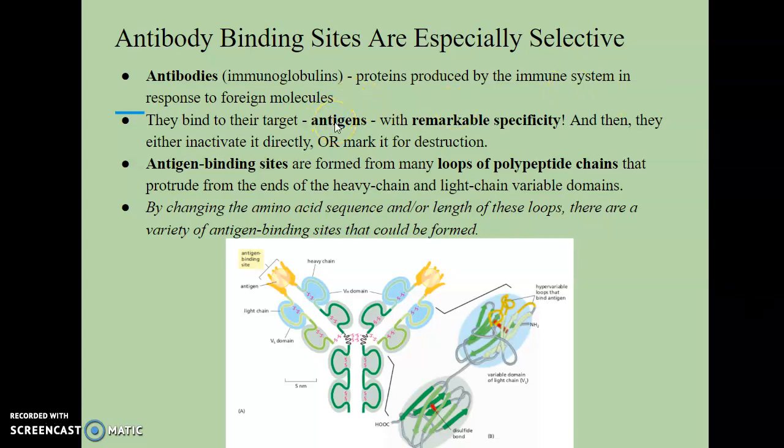Anti coming from antibody, and then gen coming from generator. So it's an antibody generator. Our antibodies are actually generated specifically for these antigens. And so when they recognize the antigen and bind to them, they can actually do one or two things. They can either inactivate the foreign molecule altogether, or they can mark this foreign molecule for later destruction.